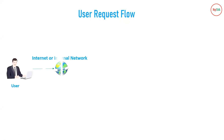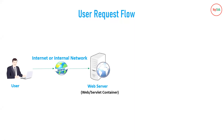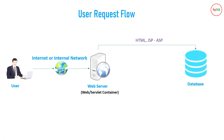Before we go to understand the architecture of JBoss, let us understand the request flow. Suppose there is a user trying to access some website, which could be on the internal network, intranet, or public domain. Your website could be on a web server — also called a web server or servlet container — because it handles HTML, JSP, and ASP kind of requests.